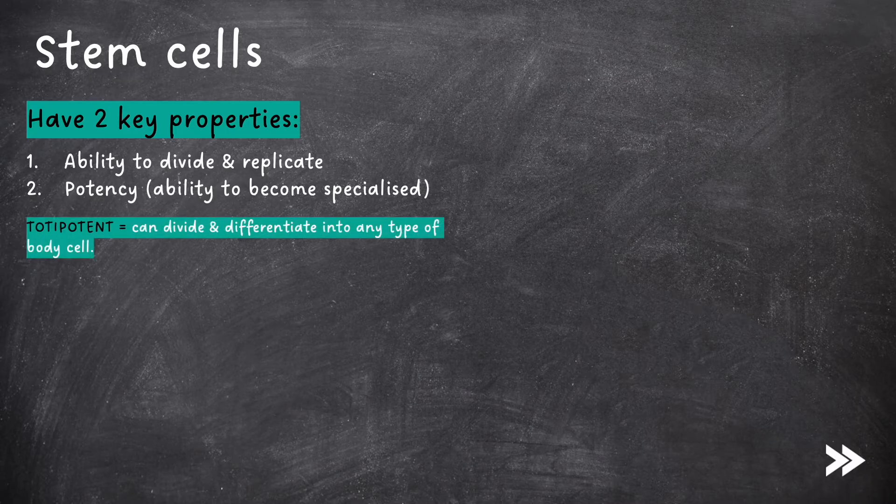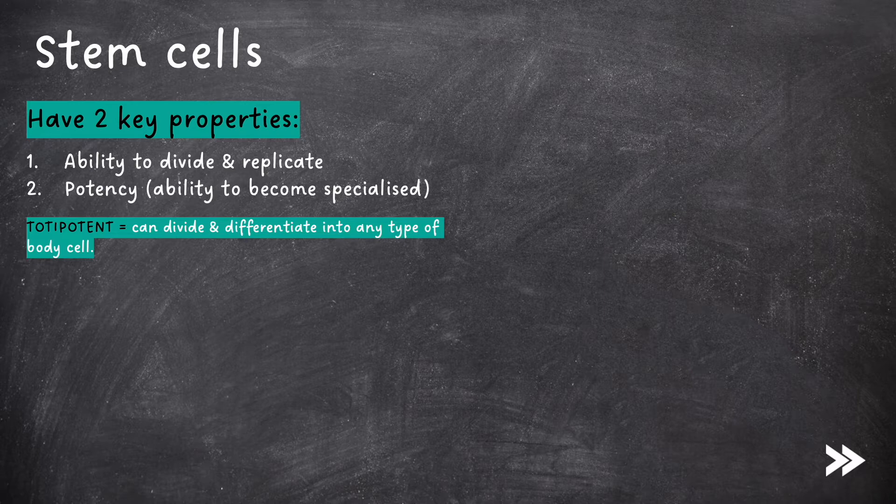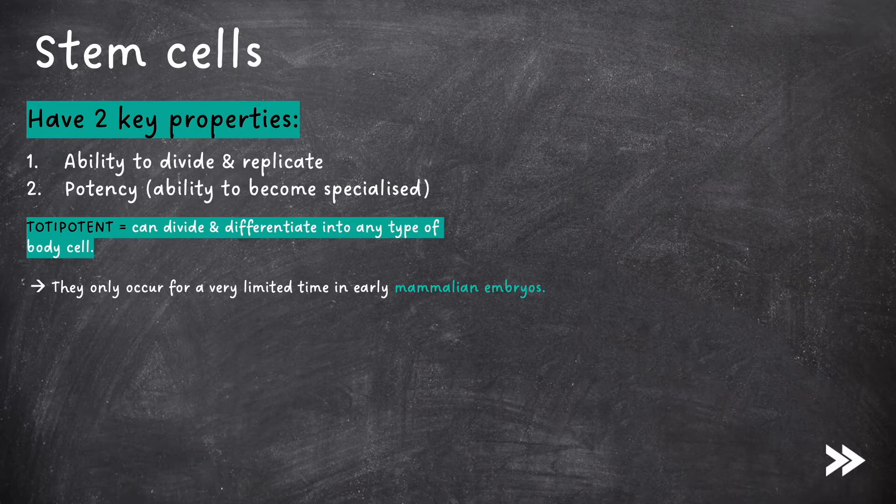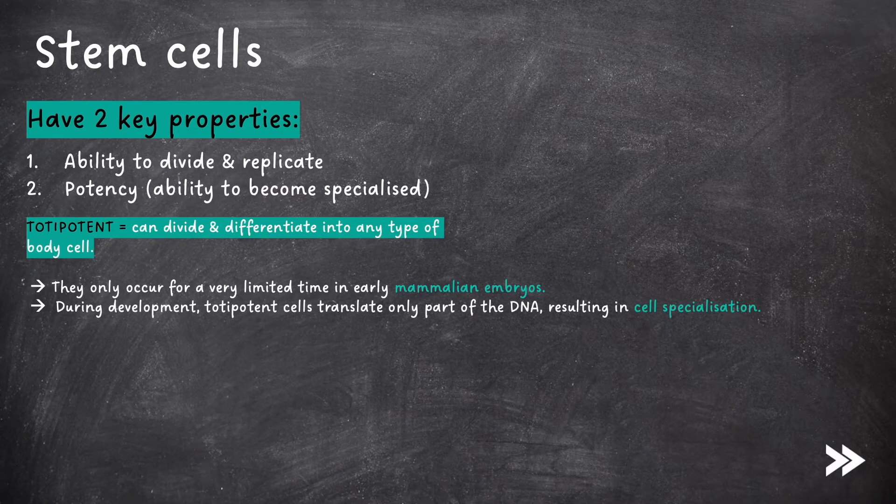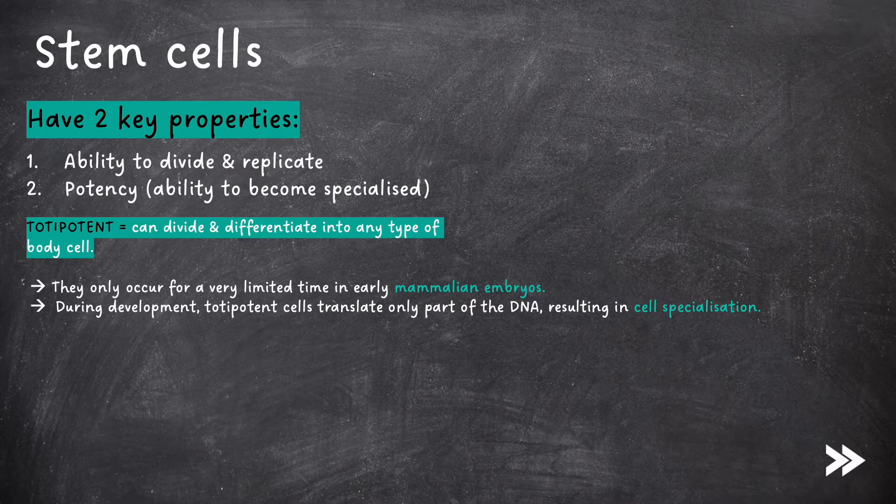Totipotent stem cells can divide and differentiate into any type of body cell. They include the cells of the placenta. They only occur for a very limited time in early mammalian embryos. During development, totipotent cells translate only part of their DNA, resulting in cell specialization.